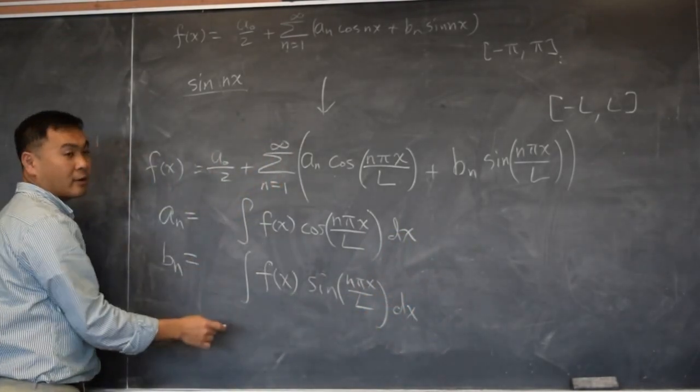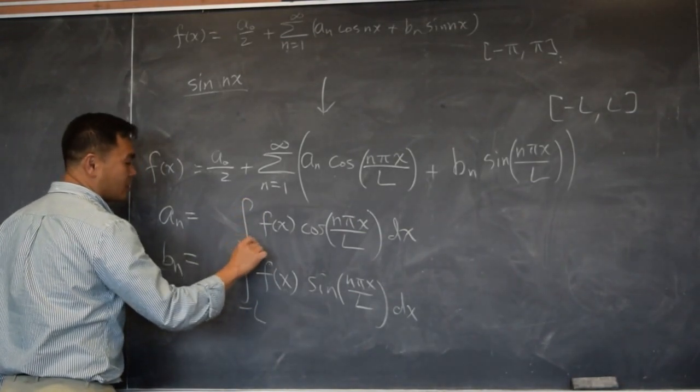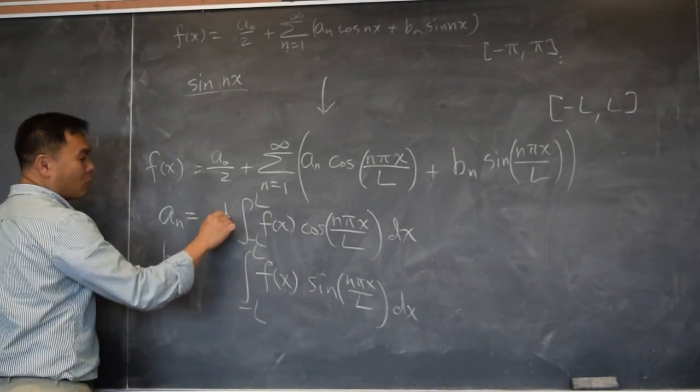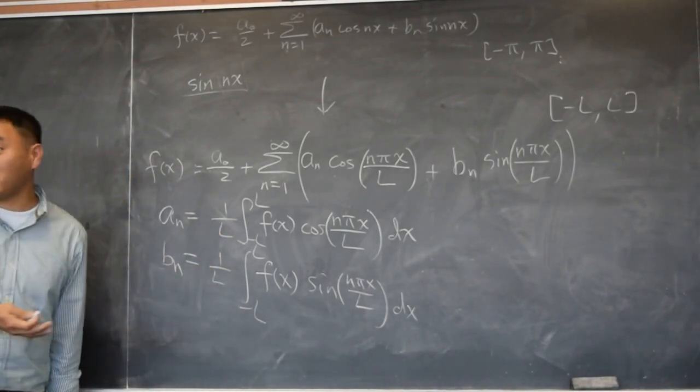Over where to where? From negative L to L. Negative L to L. Negative L to L. One over? L. L. So L is replacing the pi.